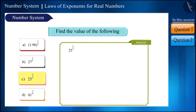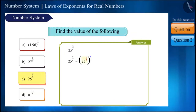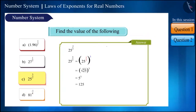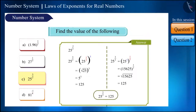Here the power of 25 is 3/2. We write it in brackets as 25 to the power 1/2, and then the whole thing to the power 3. So the square root of 25 gives us 5, and then 5 to the power 3 — the cube of 5 — which is 125. You can also solve it by first finding the cube and then the square root.